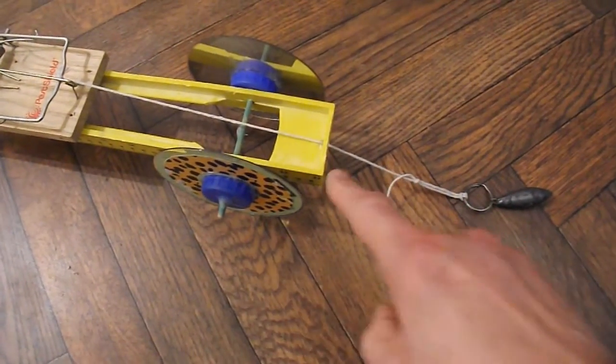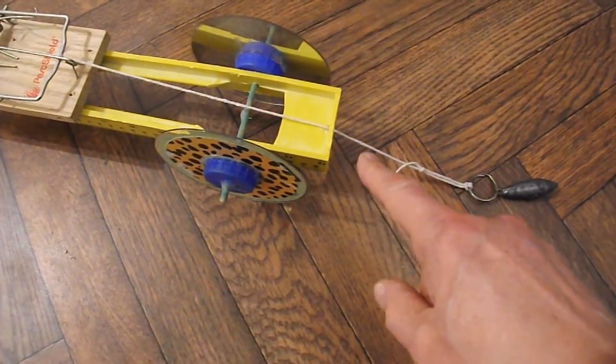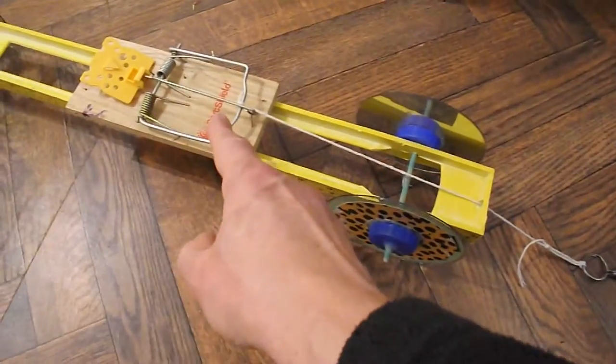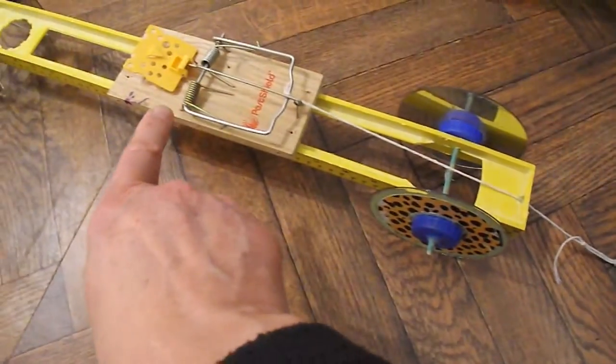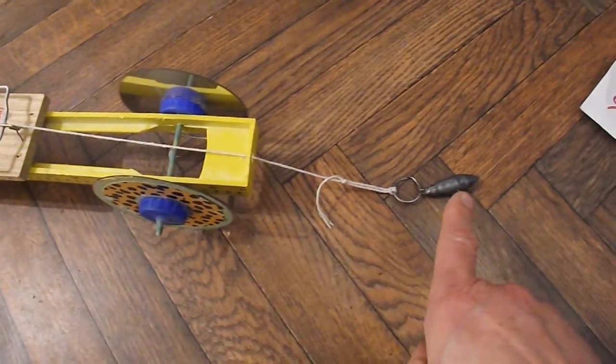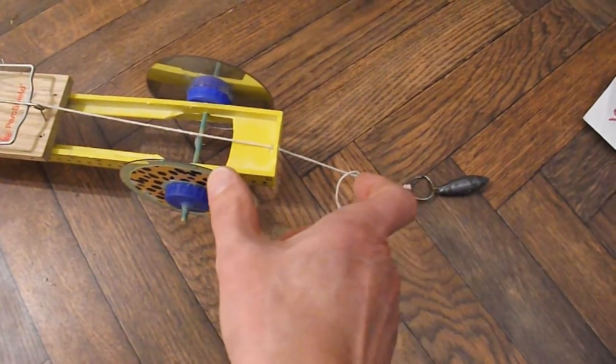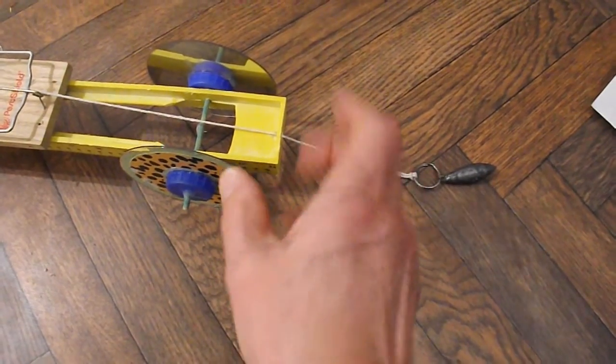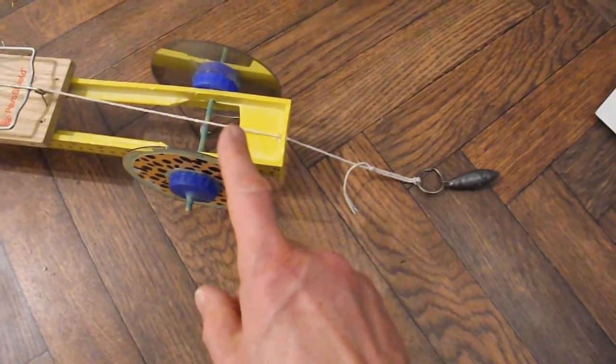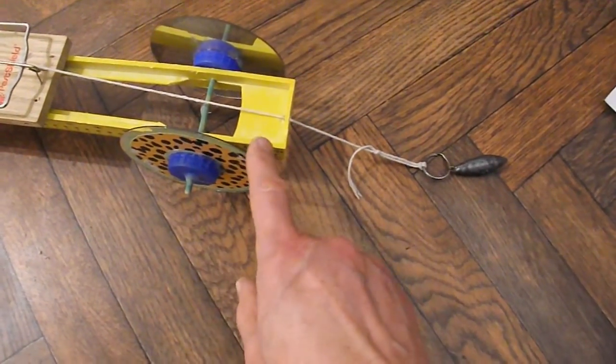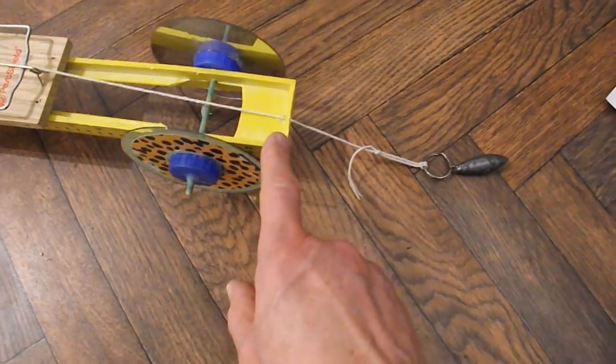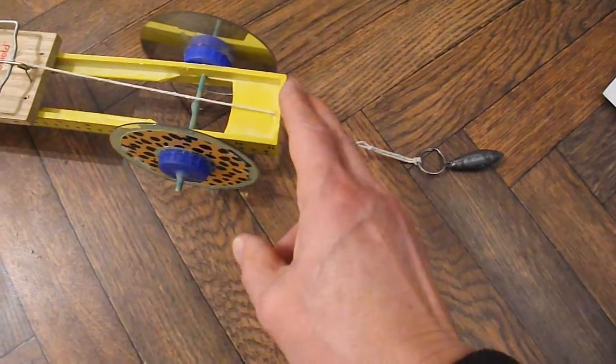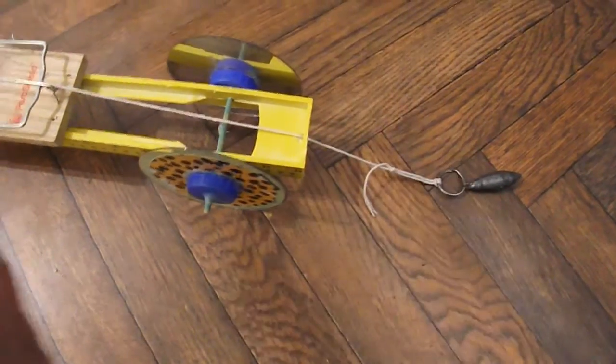With it set up like this, as the rat-trap pulls the weight forwards, the car tries to go backwards at the same time because we've got equal and opposite forces. So what Andy wanted me to do was put some sort of brake mechanism on the wheels to stop them rolling backwards so that all the momentum went forwards.